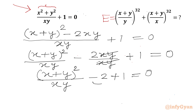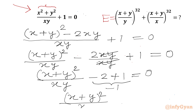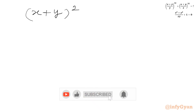We get (x + y)² over xy minus 2 plus 1 equals 0, which simplifies to (x + y)² over xy minus 1 equals 0. Adding 1 to both sides gives (x + y)² over xy equals 1. Cross-multiplying, since x ≠ 0 and y ≠ 0, we get (x + y)² = xy.